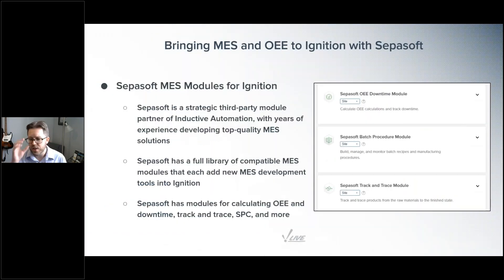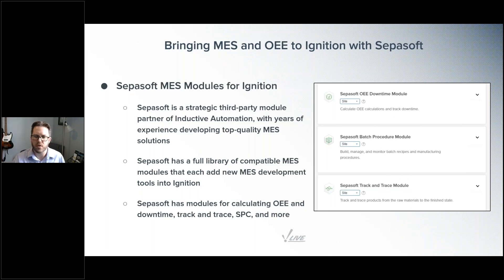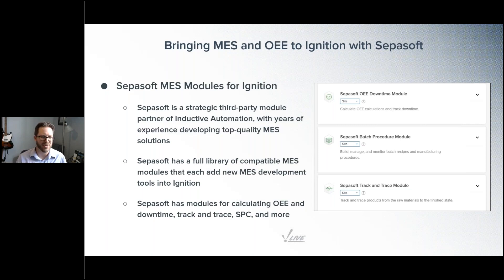To find these modules, if you're on Ignition's pricing page at the checkout, there is a strategic module section. You'll see sections for OEE downtime, batch procedure, and track and trace modules. You can find them directly on Ignition's website, go to Cepisoft's website for more information, or give us or your local integrator a call and we're happy to walk you through it.